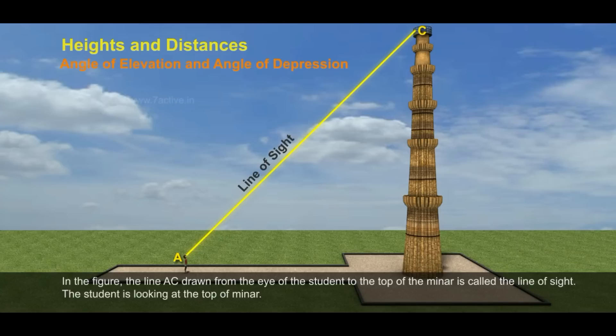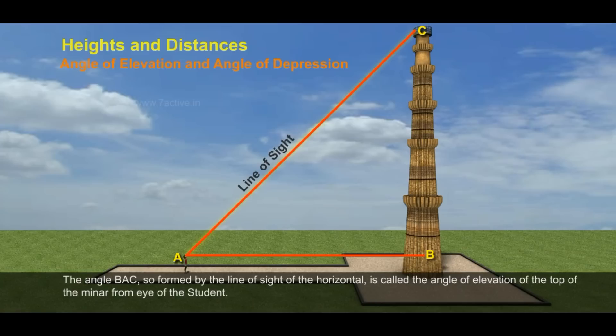The student is looking at the top of the minar. The angle BSC formed by the line of sight with the horizontal is called the angle of elevation of the top of the minar from the eye of the student.